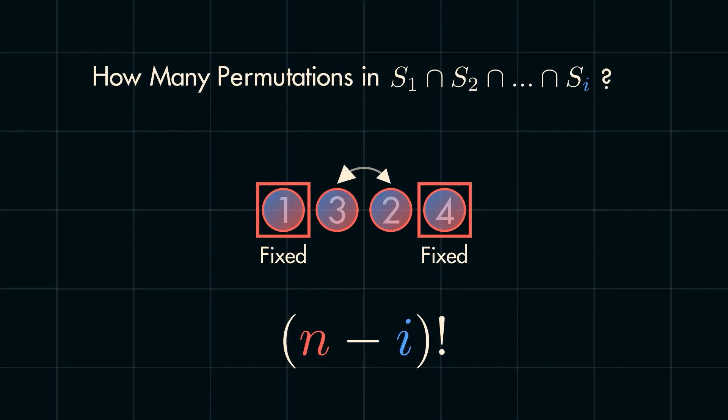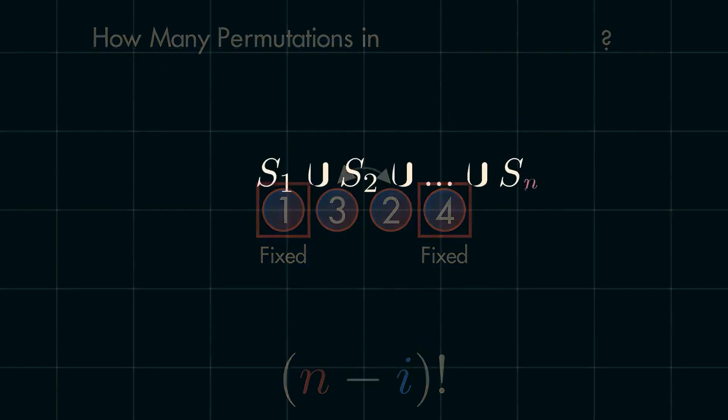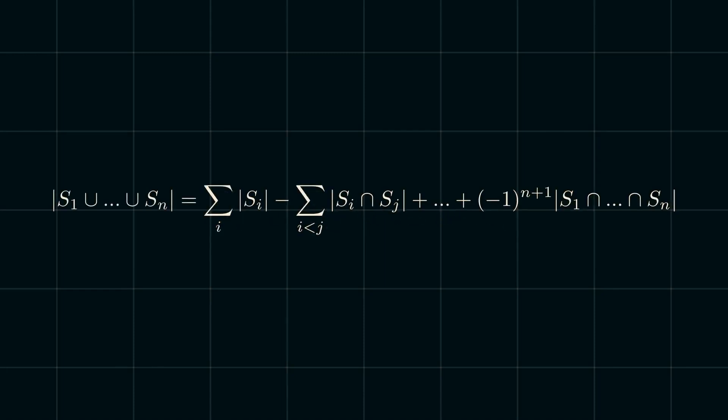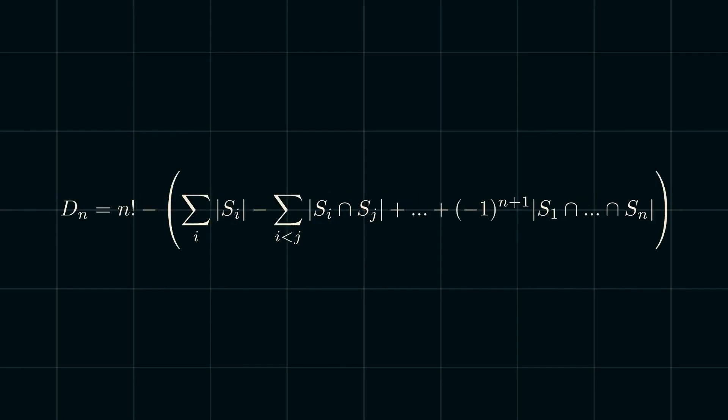But how does it help us find the number of elements that are not derangements? Well, we need to find the number of unique permutations that fix at least one element, which, from our discussion of the inclusion-exclusion principle, means that we need to find the union of all the s sets. The inclusion-exclusion principle says that the number of elements in the union of an arbitrary number of sets is the sum of a bunch of intersections of the sets. Like mentioned above, what we need to do to find the number of derangements now is to just subtract this amount from the total number of permutations possible. However, this formula is obviously extremely ugly and far too unwieldy to actually use, so let's simplify it down.